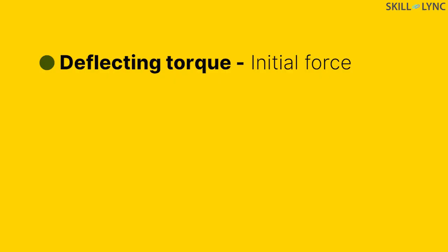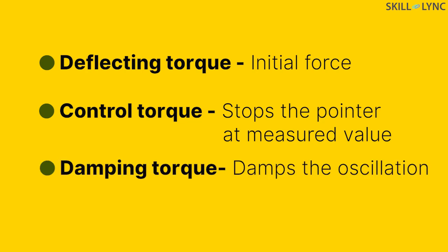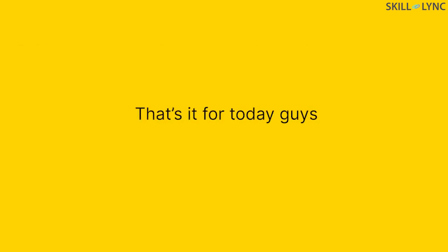Thus, we can arrive at the following conclusions. The deflecting torque gives the initial force required for the movement of the pointer. The control torque restricts the movement so that the pointer stops at the measured value and the damping torque is given to damp the oscillations in the pointer. With this, we will end our video. See you in the next one. Until then, bye.